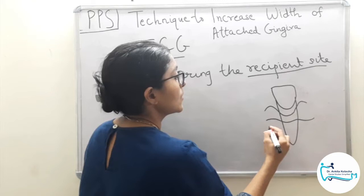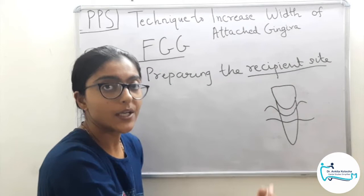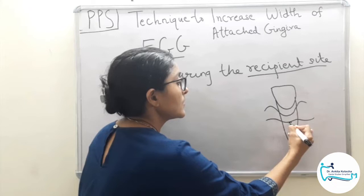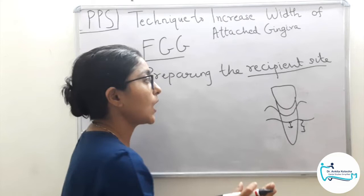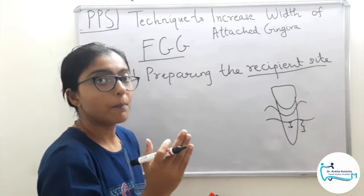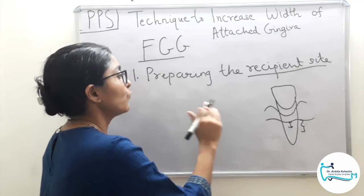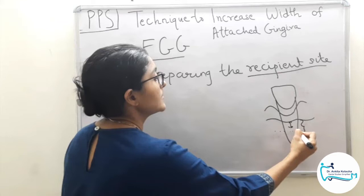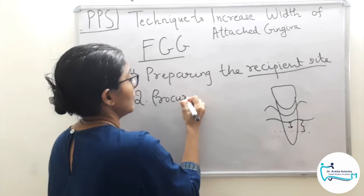This is the existing width of attached gingiva and we are going to try to increase it apical to the recession. Somewhere here will be our recipient site. In this first step, the recipient bed is prepared. For now, let's cover preparation of the recipient bed.